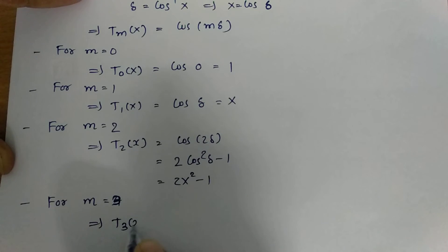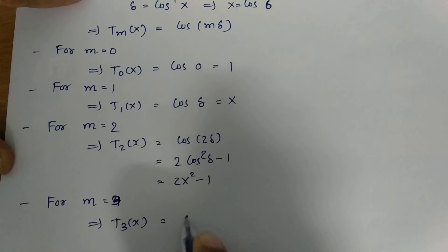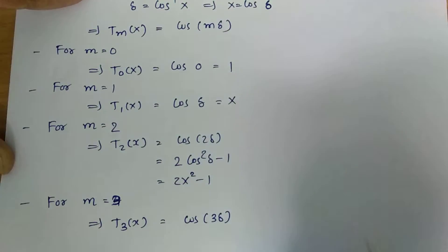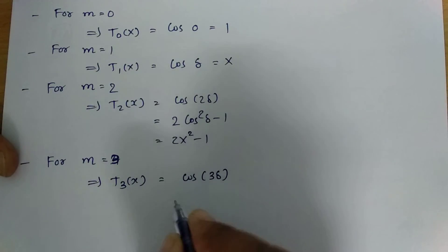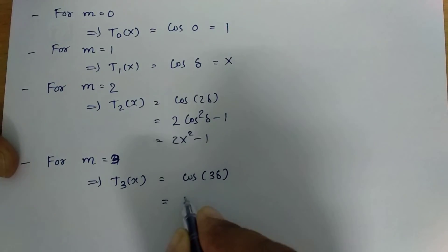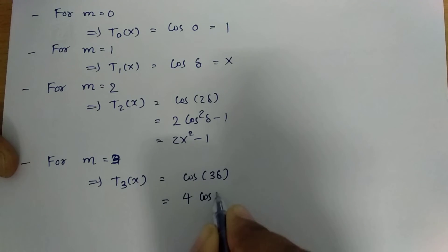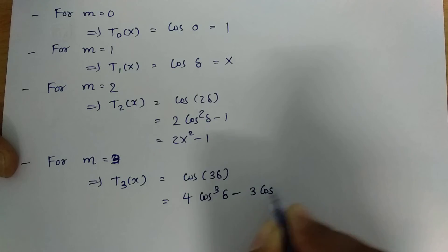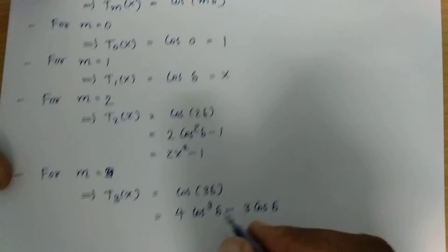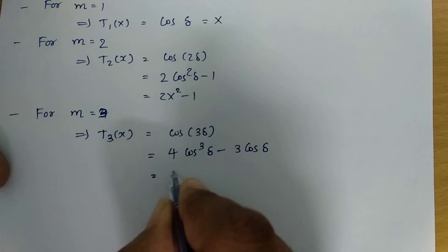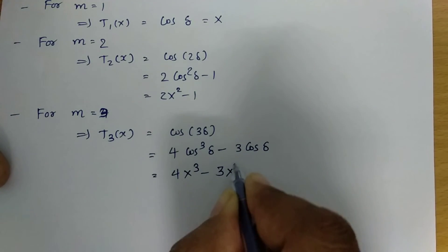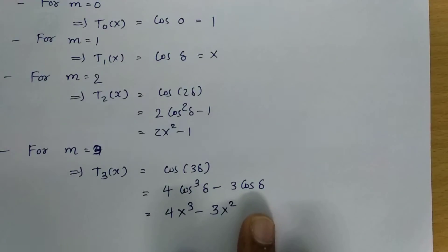For m equals 3, T3 of x equals cos of 3 delta. Cos of 3 delta equals 4 cos cubed delta minus 3 cos delta. Since cos delta equals x, this gives 4x cubed minus 3x.